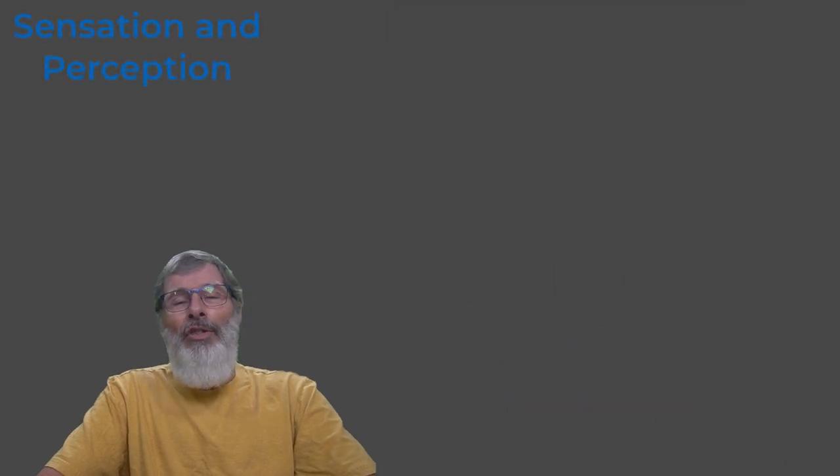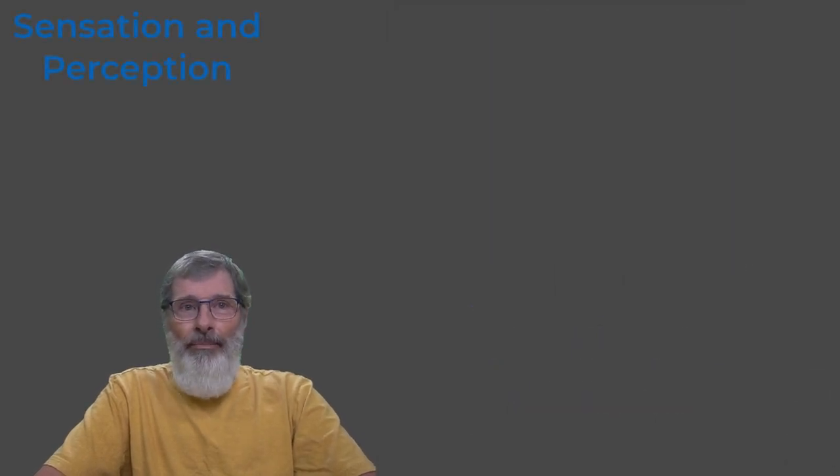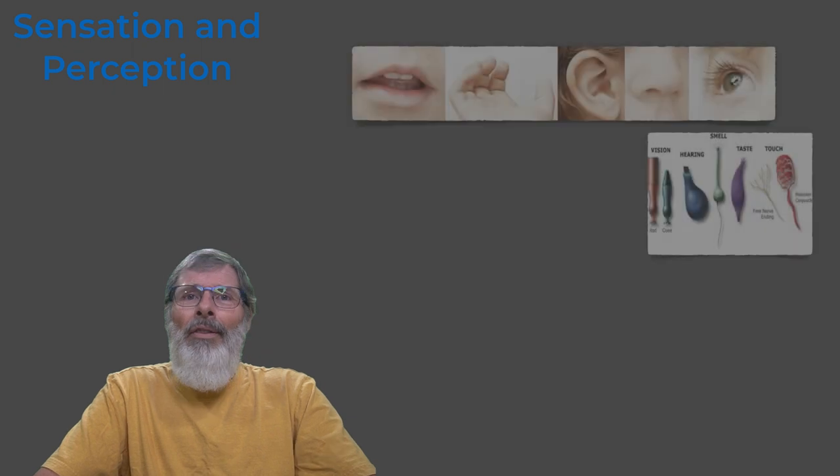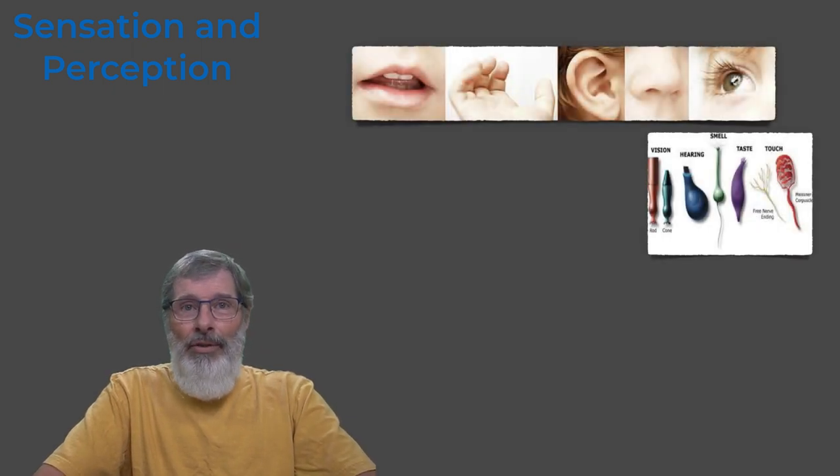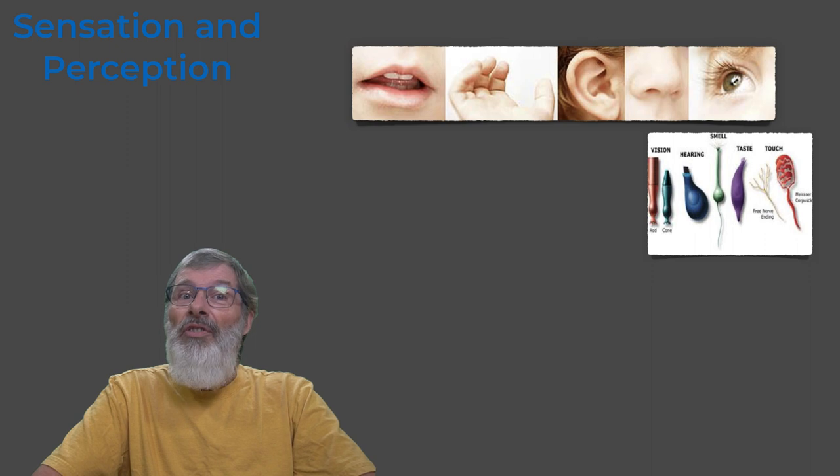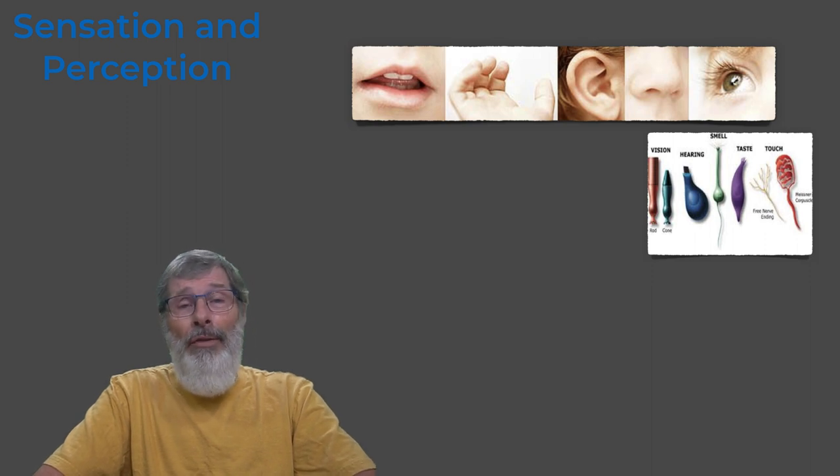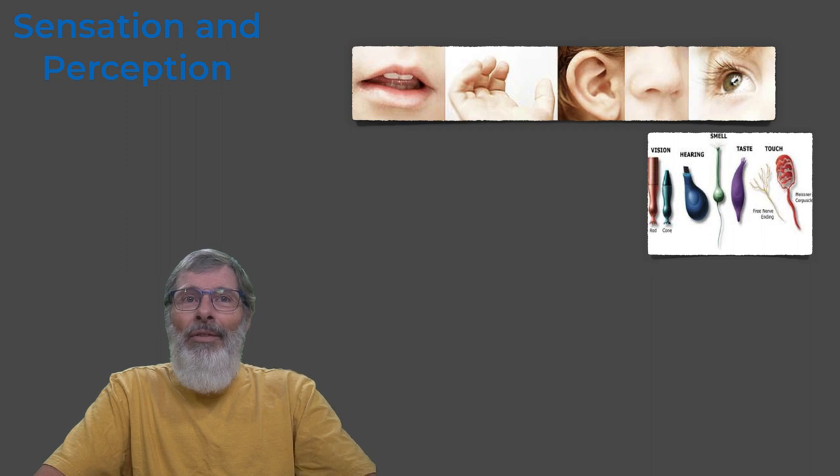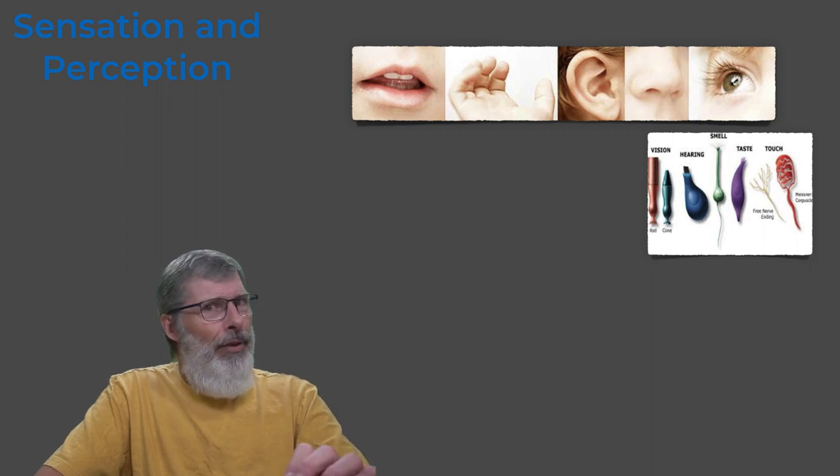So some definitions around sensation and perception. Sensation: the stimulation of sensory receptors and the transmission of sensory information to the central nervous system. Now that's important. There are receptors and we'll get into this quite a bit.